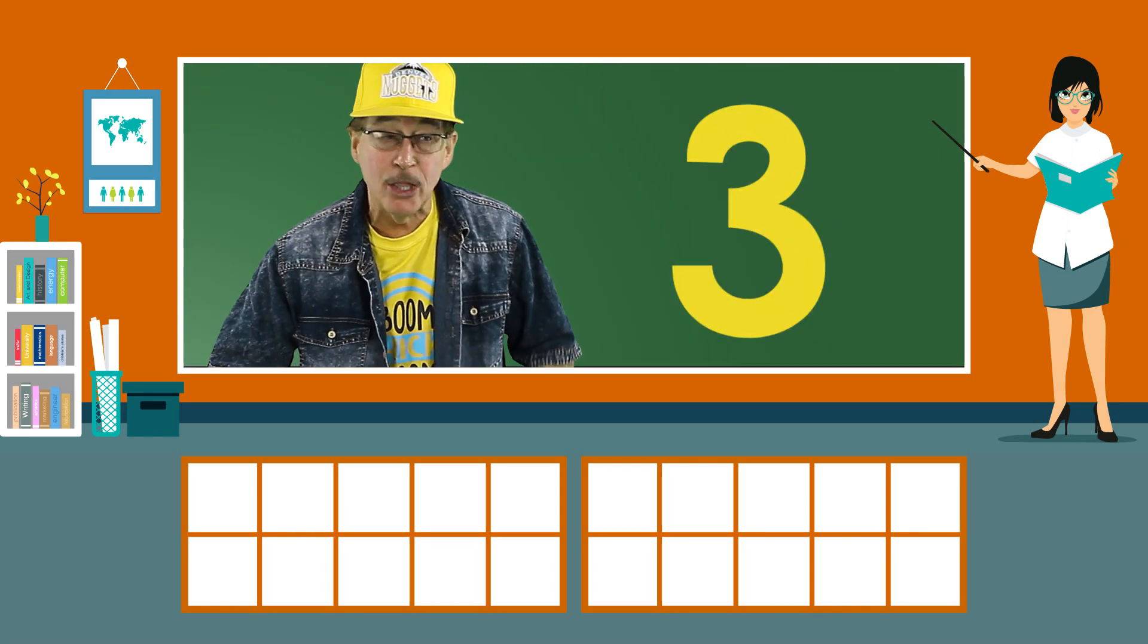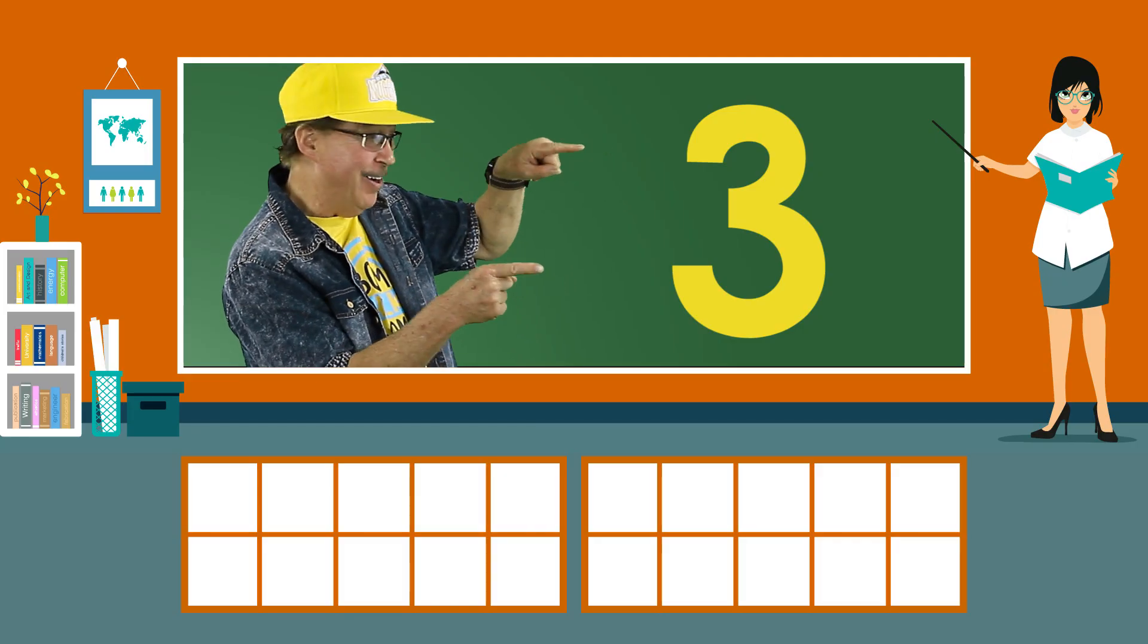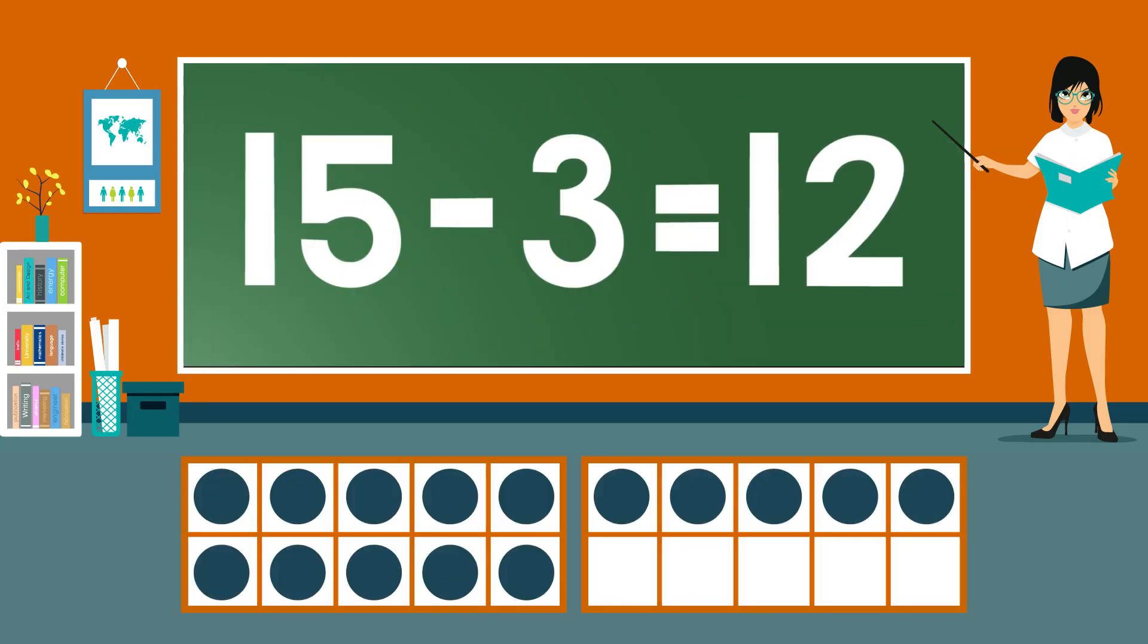Subtract 3 from each number. 15 minus 3 equals 12.